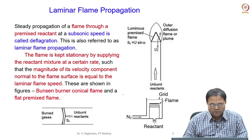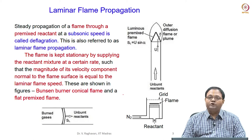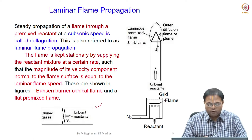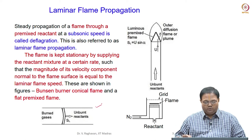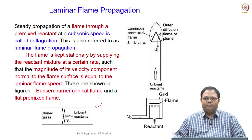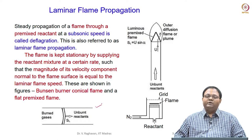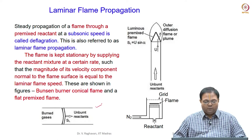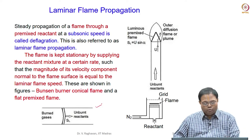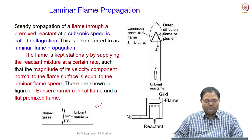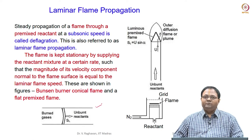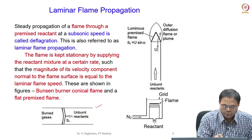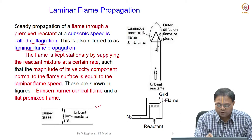We have already seen when we covered deflagration and detonation: if we have a long duct filled with premixed reactants at some unburned temperature and ignited at the open end, then a steady flame propagates through the reactant mixture. Based upon the equivalence ratio, unburned temperature, and fuel type, the flame speed will vary. This deflagration was called laminar flame propagation.